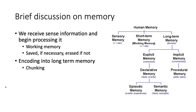Within implicit memory is your procedural memory — where you store skills and tasks. This is where things like knowing how to use a tape measure are ingrained in you over time. They're unconscious — you don't actually have to consciously recall them to use the memory.